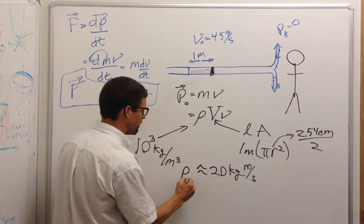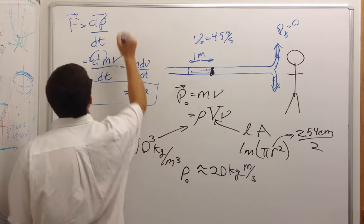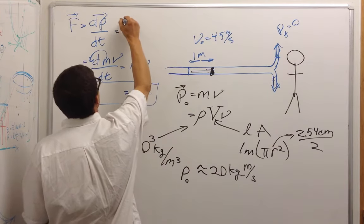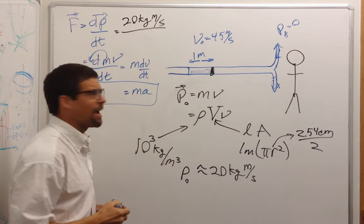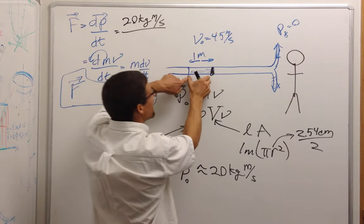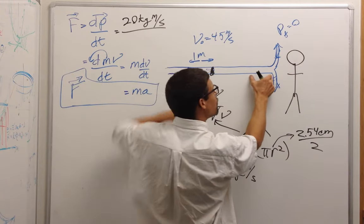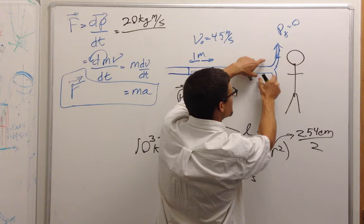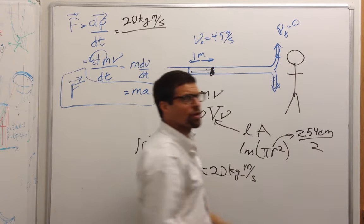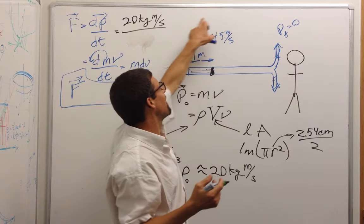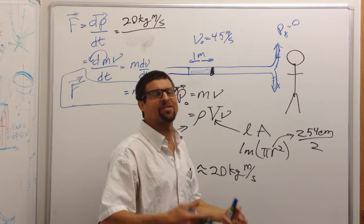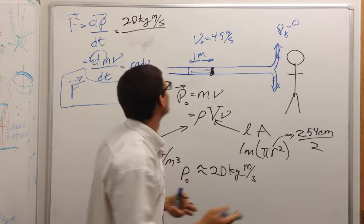And so we want to ask ourselves, what is the force? So this is going to be 20 kilogram meters per second in the amount of time that it lost that momentum. It's not losing the momentum now. It's losing it right here. As long as it takes for that water to make this turn, it's going to be 1 meter divided by 45 meters per second. The meters cancel, it's 1 over 45th of a second.